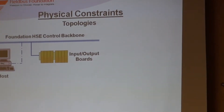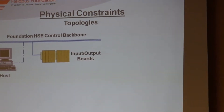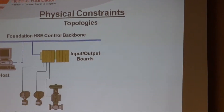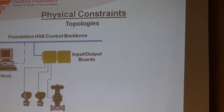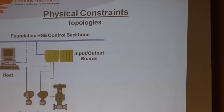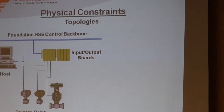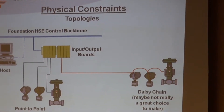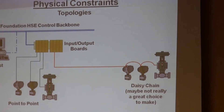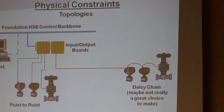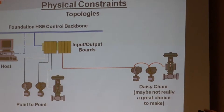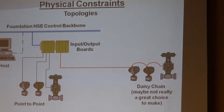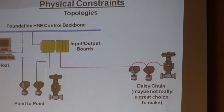Let's build one. You start up with your host, and it's got its own input and output boards - we'll call them H1 interface or a linking device or whatever. You can have point-to-point. Is that really practical? No, not really, but you can do it. You also have daisy chain. Is there any reason why you should not do that? Take one device out and everything downstream goes down. There may be occasions where that's okay, if you've got a loop that's totally independent and if something goes down, so what. Usually, don't.